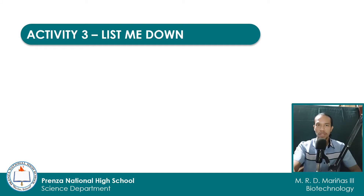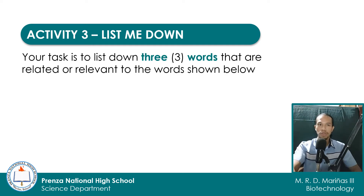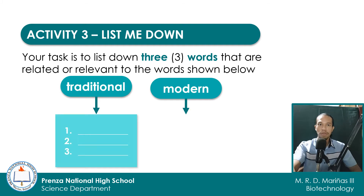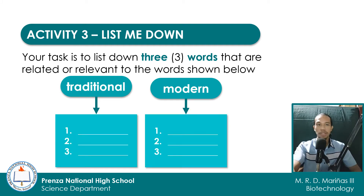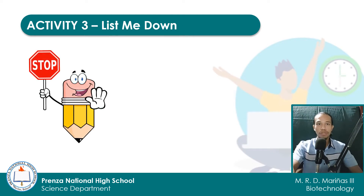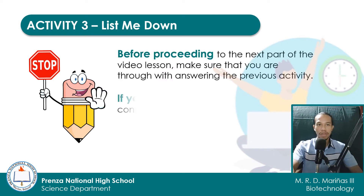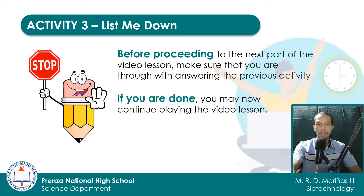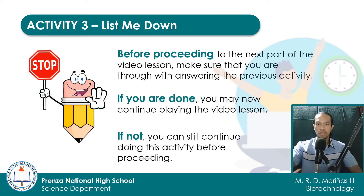As part of our usual routine in our class, let us have a vocabulary building activity. In this activity called List Me Down, you are asked to list 3 words that are synonymous or connected to the words traditional and modern. You may write your answer on the space provided in the activity sheet. Make sure that you are through with answering this part before continuing. If yes, you may now continue playing the video lesson, but if not, you can still have your time to finish it.